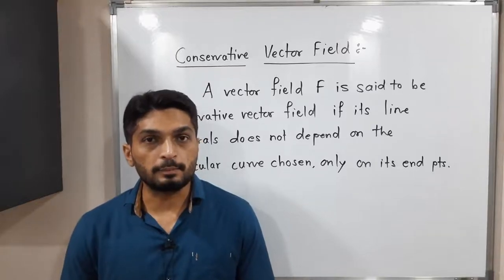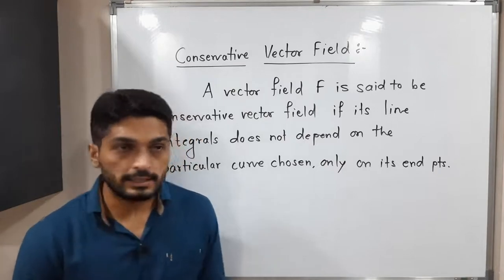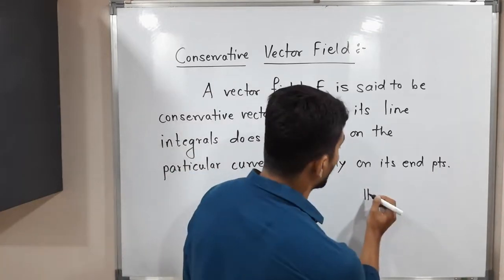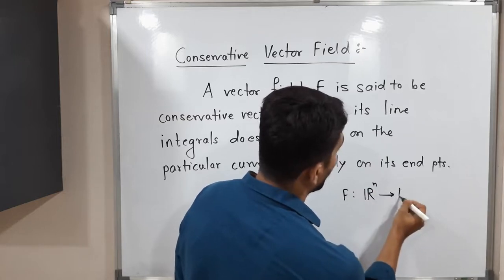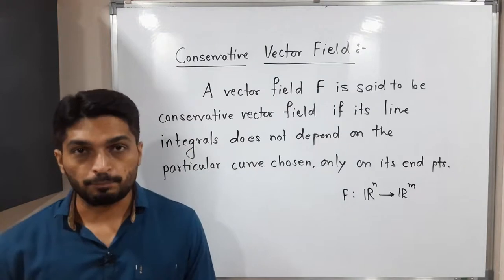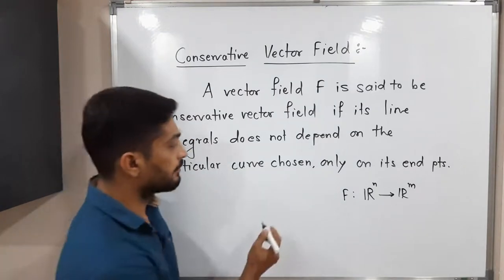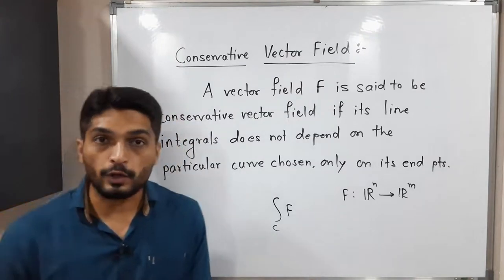Everyone, let us discuss the concept of conservative vector field. You are familiar with vector fields - a function from R^n to R^n. So F is a vector field means it is a function from R^n to R^n. Let us see when we say it is conservative. We are familiar with the concept of line integrals of vector fields. We denote it in this way. Many problems we have already solved in our previous videos of this type.